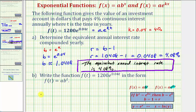We would have f(t) equals a, the initial starting amount is still 1200, times the base b, which is approximately 1.0408, raised to the power of t.